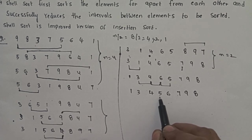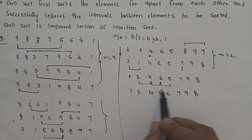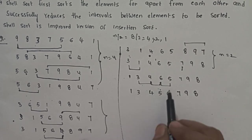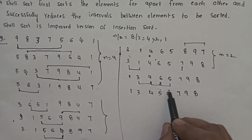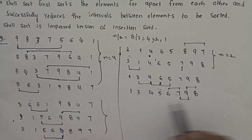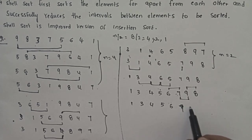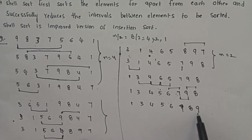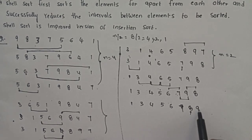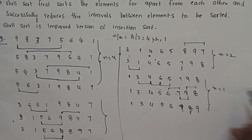Swap here: 5 and 6 confirmed. Back checking: 4 is less than 5, no swap needed. Comparing 6 and 7 — no swap. Comparing 7 and 9 — no swap. Comparing 9 and 8 — 8 is less than 9, so swap. Back checking: 7 is less than 8, no swap. Swap is completed. This is the final pass for interval n equal to 1.